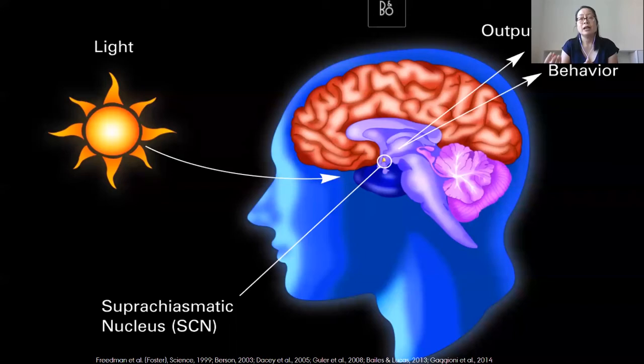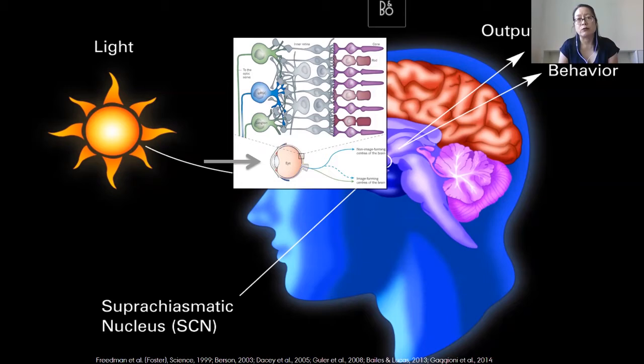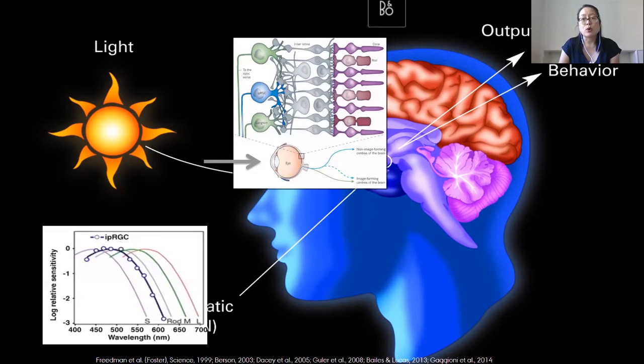Light affects our circadian rhythms through a non-image-forming photoreceptor system, different from our rods and cones. We have cells in our retina called intrinsically photosensitive retinal ganglion cells (ipRGCs) — less than 5% of all retinal ganglion cells — and many of these project directly to the master clock in the brain. Peak sensitivity of those cells is at shorter wavelengths, typically in the blue light range around 480 nanometers.